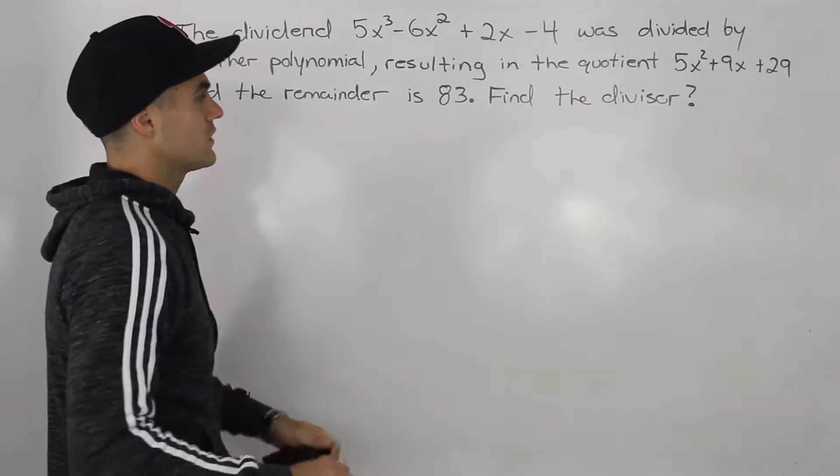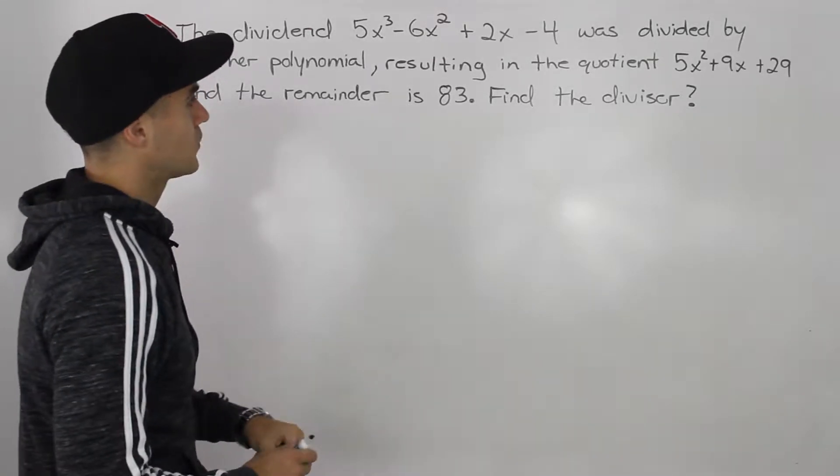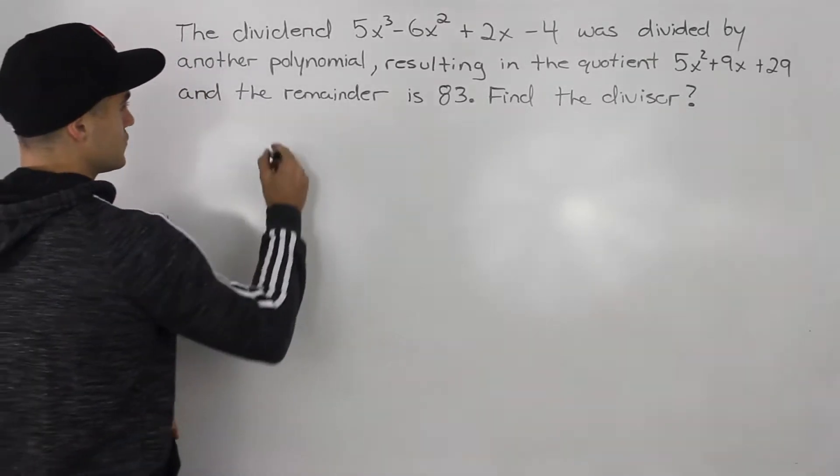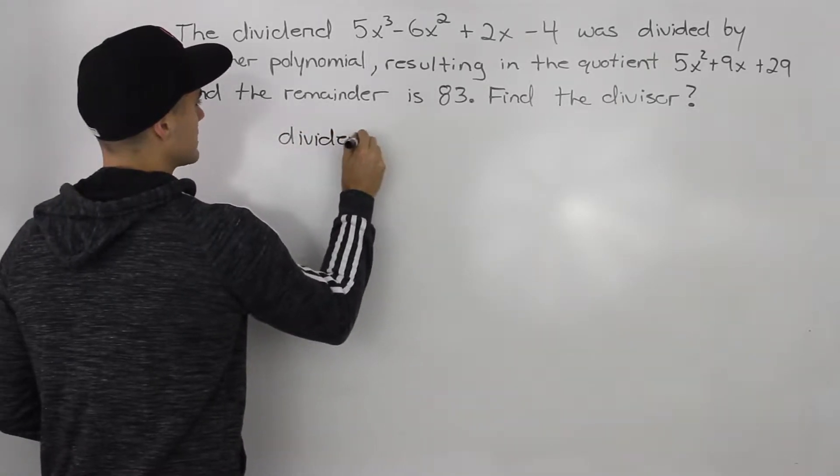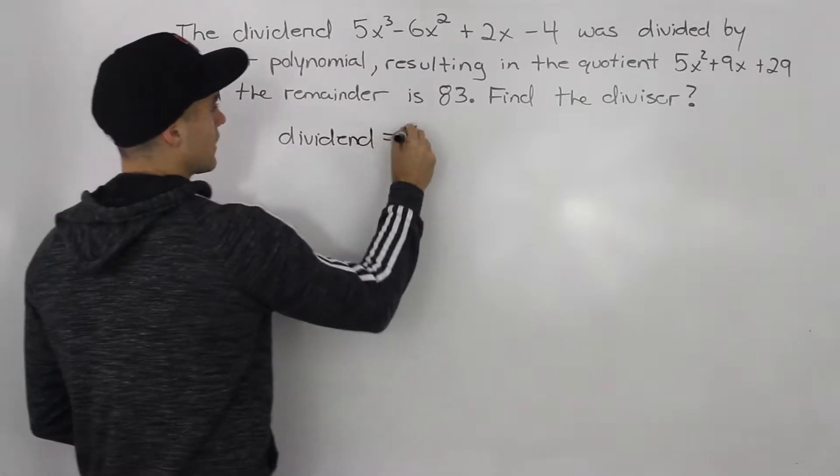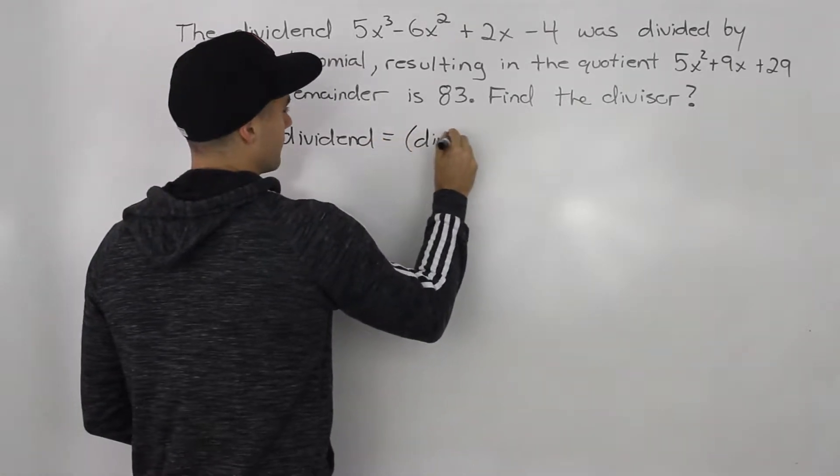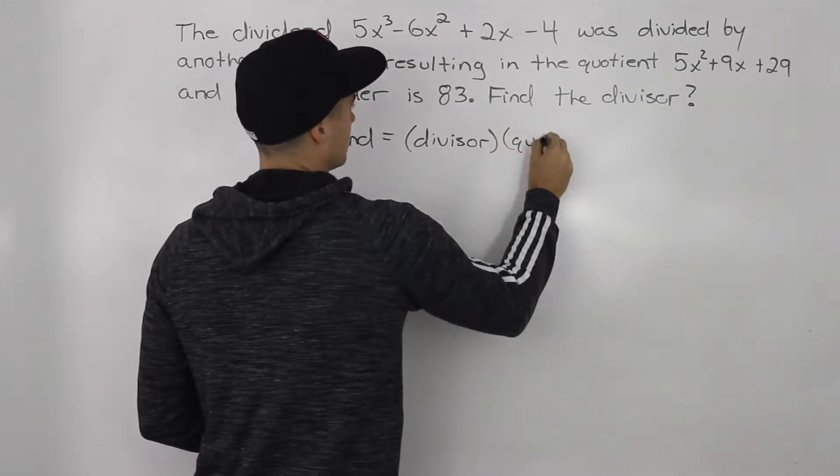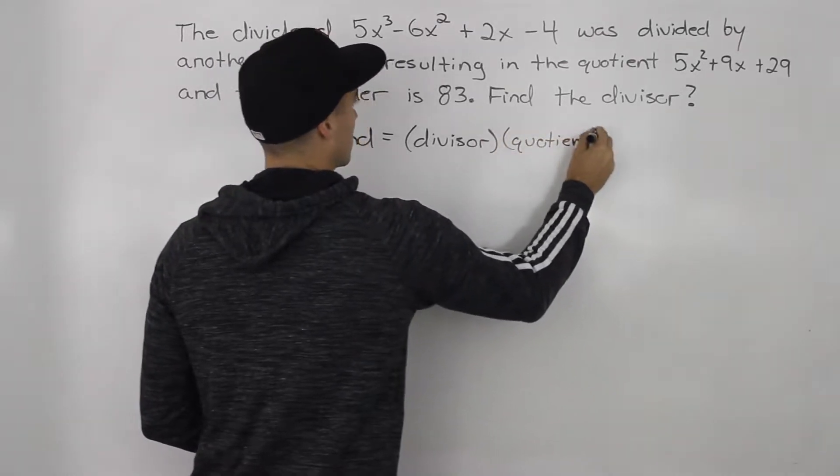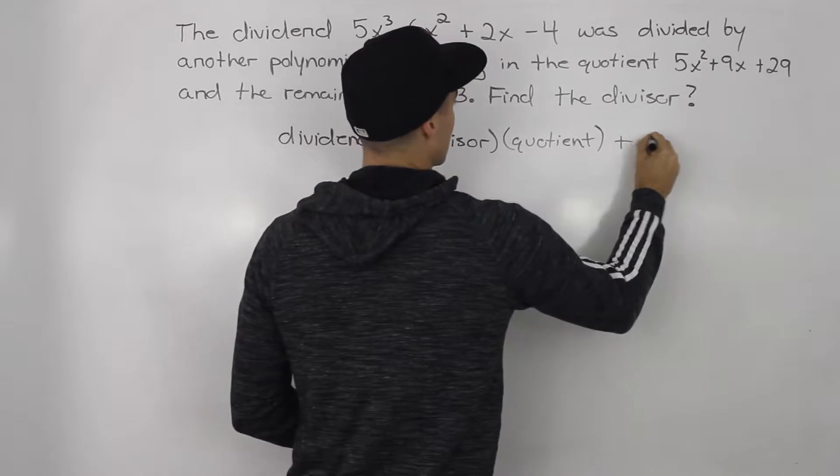Okay so the first thing you want to do whenever you're given a question like this is you want to write out what the division statement is. So we know that the dividend is equal to what? The divisor times the quotient plus the remainder.